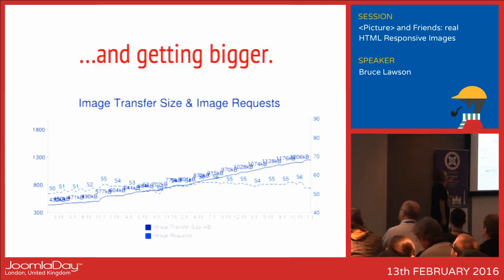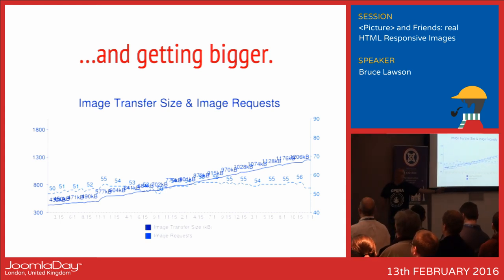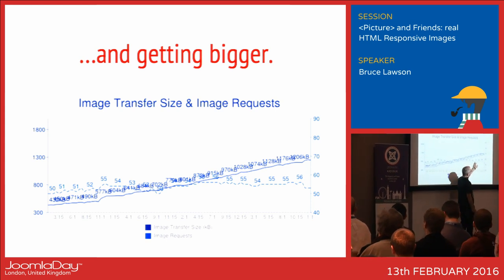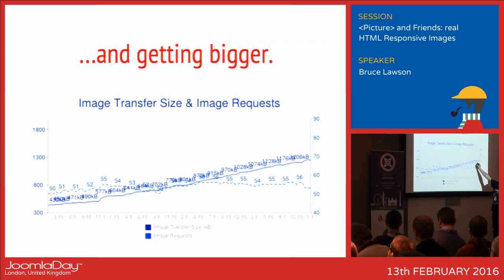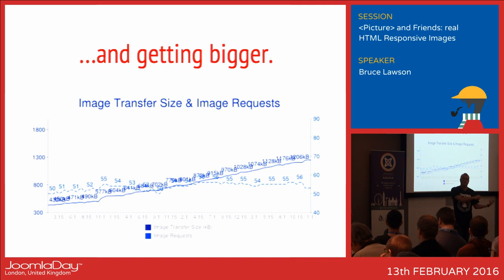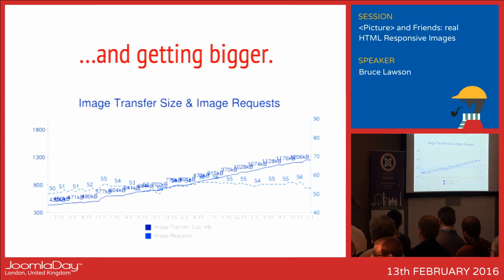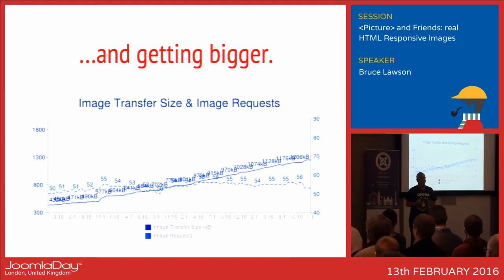The images coming down the wire are bigger. This is a graph from HTTP Archive — 80 years worth of data. The number of images requested per page wiggles around the mid-50 mark, but the size of each image has increased enormously. A lot of this is due to what Apple calls Retina, or what non-Apple fans call high DPI screens. You want to send images that look beautiful on your Retina MacBook, but not everybody has one.